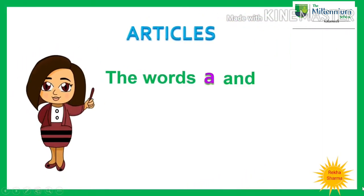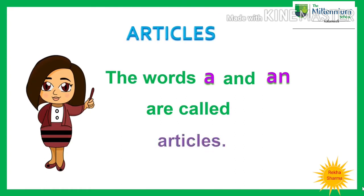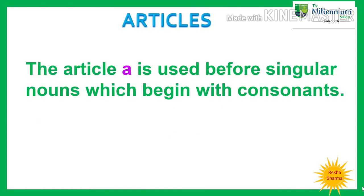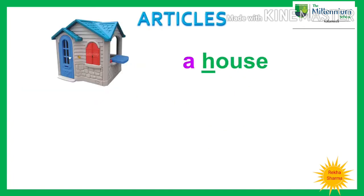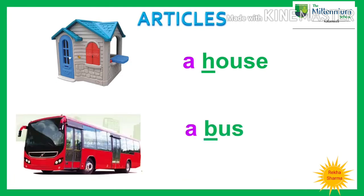The words A and AN are called articles. The article A is used before a singular noun which begins with consonants. For example, a ball, a house, a bus. If you see, these words begin with consonants. Let us see some more examples.